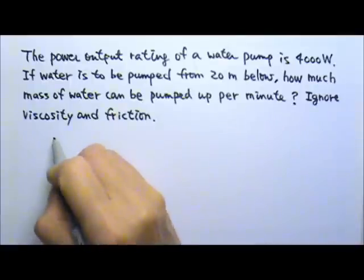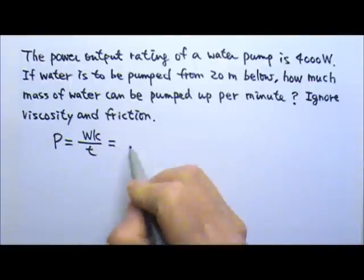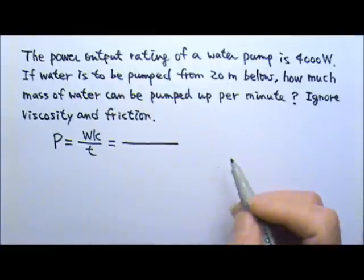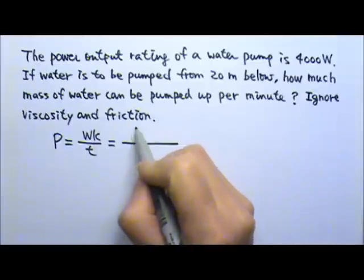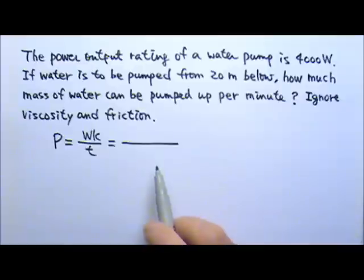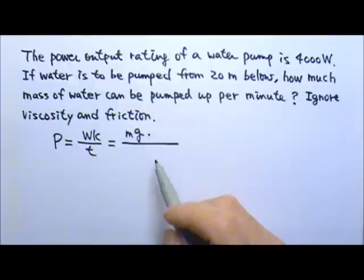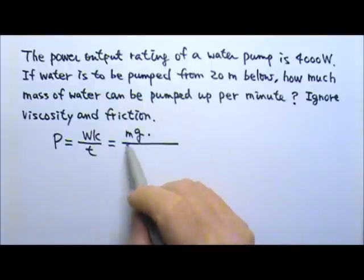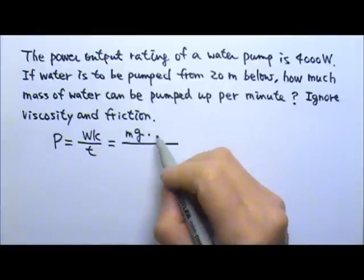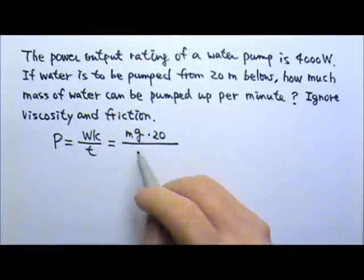Again, we have power given here and we can use power equals work over time. And now we have displacement. So we can use force times displacement. The force, if we're lifting a mass m of water, that means the lifting force has to be mg, so the pump can overcome the gravitational force. That's the minimum force if there is no acceleration. And so the force times the displacement, 20, and the cosine part is just going to be 1, divided by time. And we're looking at 1 minute, so it's 60 seconds.